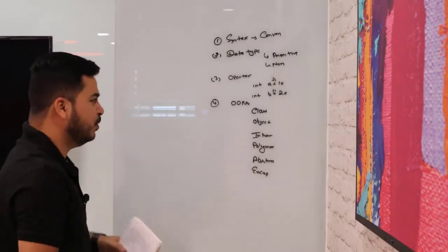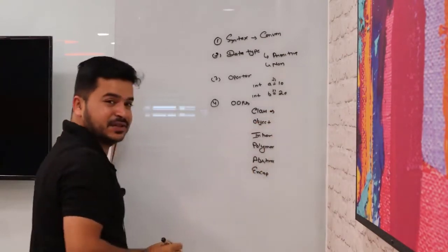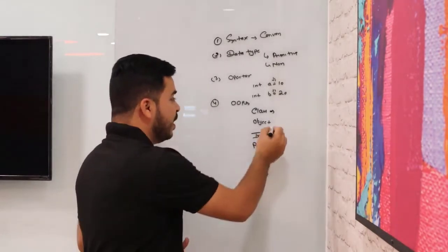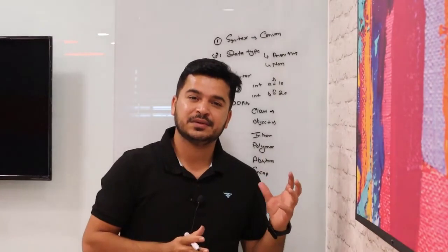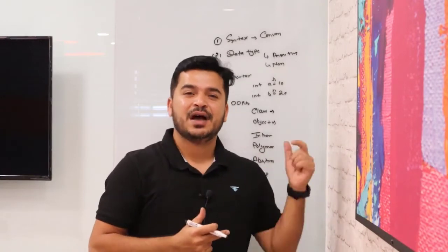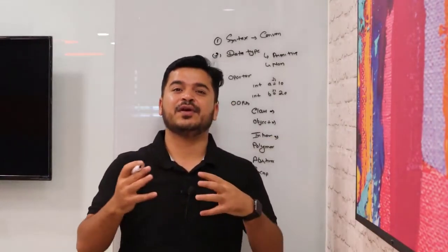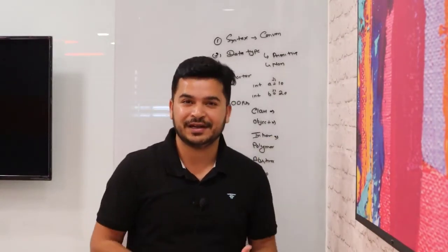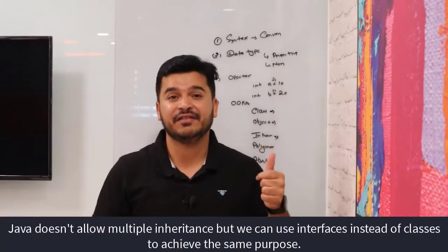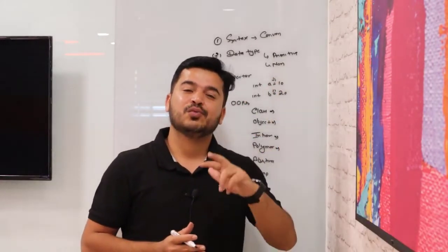You need to understand what classes are, why we need them, how to create them, what inner classes are, and how to create objects — because a class is a blueprint of an object. For inheritance, understand what it is, why we need it, how to inherit between two classes, and the types: single inheritance, multiple inheritance, and multi-level inheritance. For polymorphism, you need inheritance as well — we have runtime and compile time.